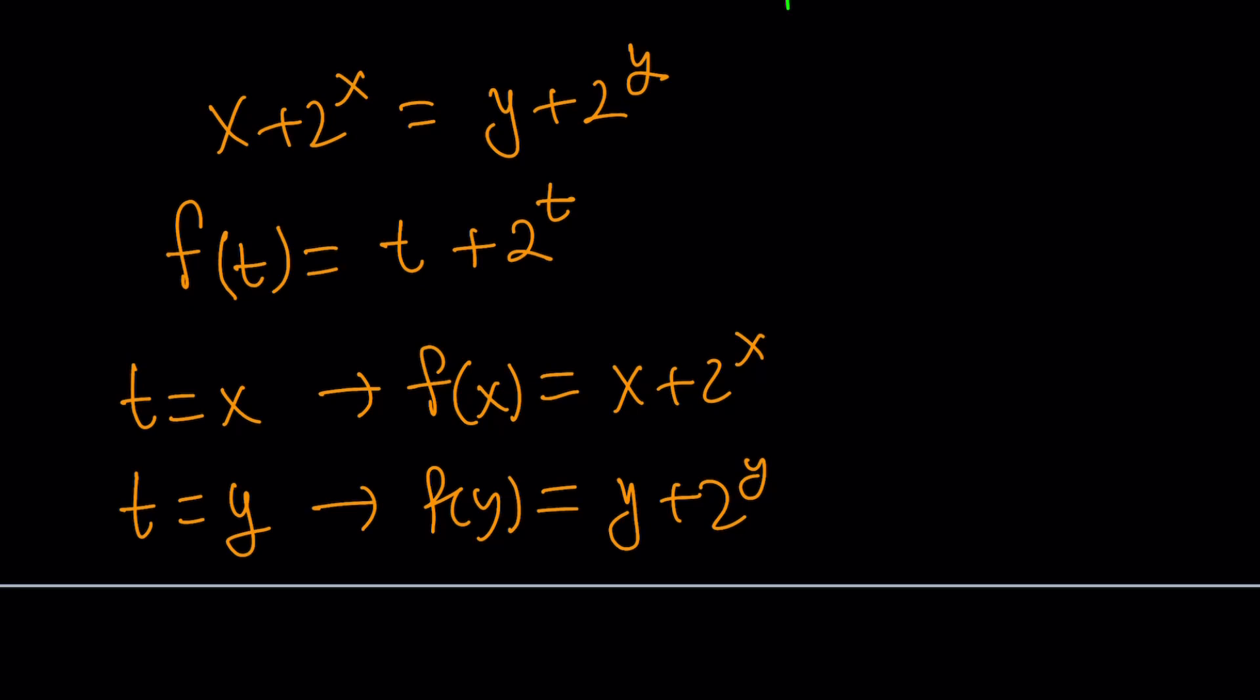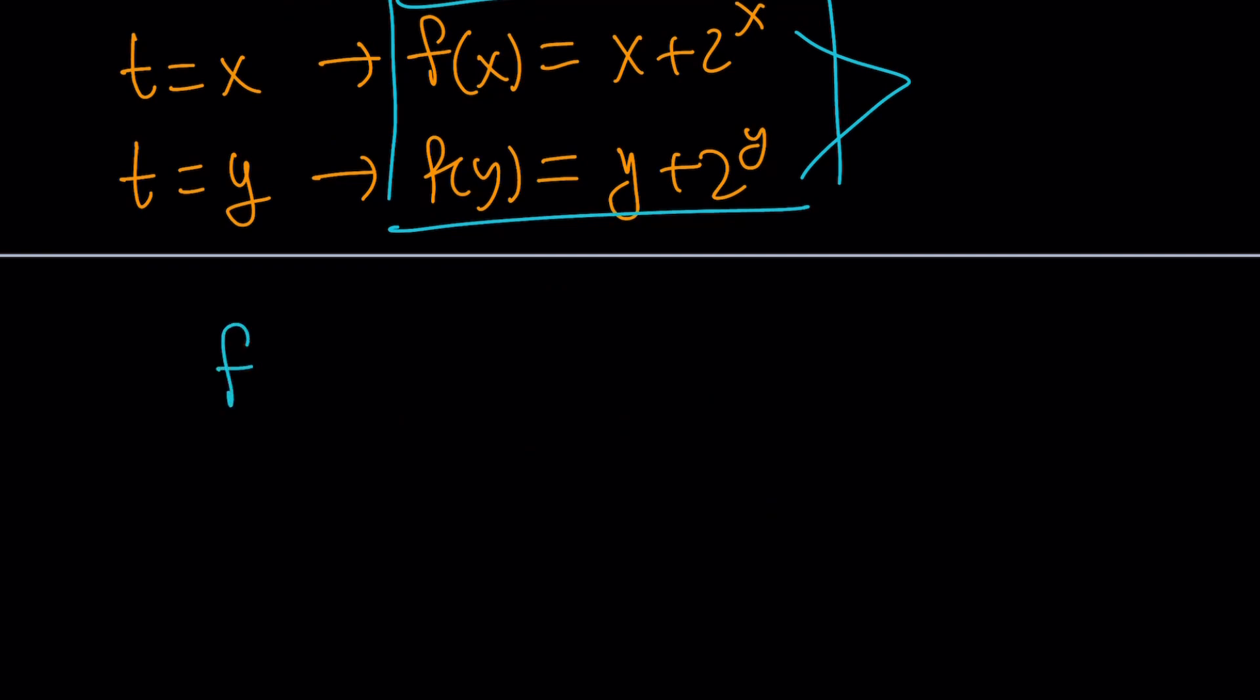So now what am I going to do with this? I got two equations, f(x) and f(y), and I know that they're equal. This gives me f(x) = f(y). What does that mean? It means I have a function whose outputs are the same at two different points. Wait a minute. Can they be two different points?